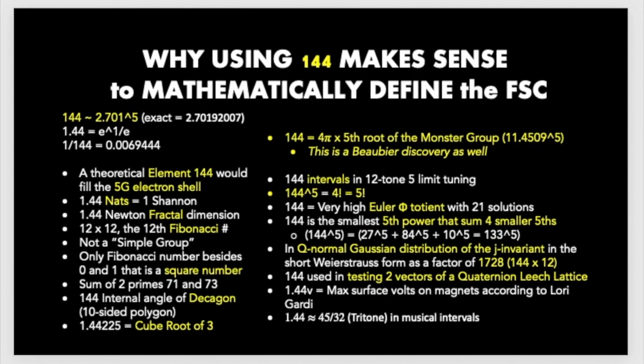Let's just look at 144 really quick and why it's important, why it makes sense to define the fine structure constant. There's all these reasons and all these places where 144 shows up. One in particular, I found how this relates to the monster group. 144 equals 4π times the fifth root of the monster group, and that's an approximation.